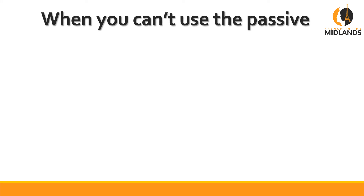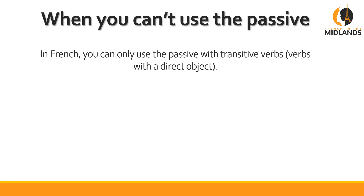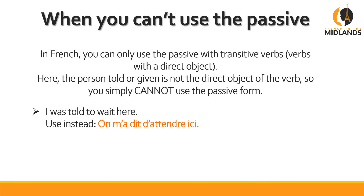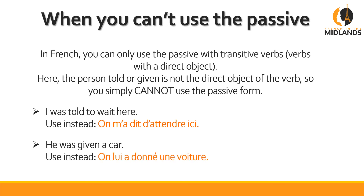Now let's look at sentences where you just cannot use the passive in French. You can only use the passive form with transitive verbs — verbs with a direct object. In the examples below, the person told or given is not the direct object of the verb but the indirect one, so you cannot use the passive. For 'I was told to wait here', you have to say 'On m'a dit d'attendre ici' — someone told me to wait here. There's no such thing as 'I was told' in French. Same for 'he was given a car' — you have to say 'on lui a donné une voiture', because he's not been given to anyone.